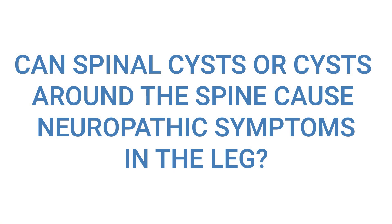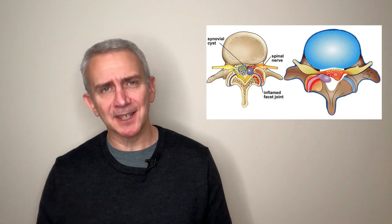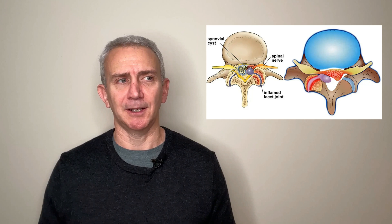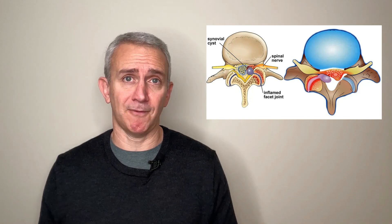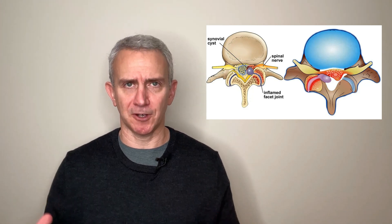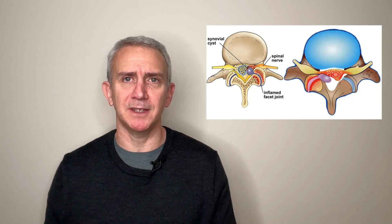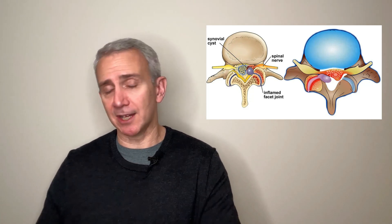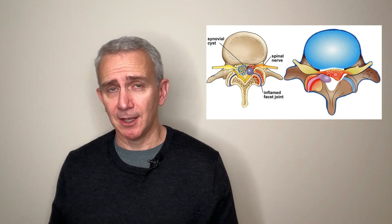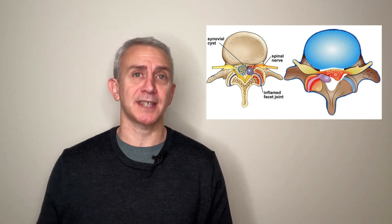This question was about: can spinal cysts or cysts around the spine cause neuropathic symptoms — can a spinal cyst cause nerve-like symptoms in the leg? It's a good question that comes up a fair amount. Cysts in the spine — the most common would be a cyst coming off of the facet joint. You can have a cyst in the spine that is not causing any symptoms and you don't have to do anything about it. You can also have a cyst in the spine that starts to compress a nerve root, in which case it can cause sciatic-like symptoms.